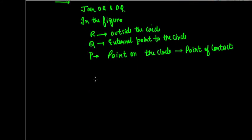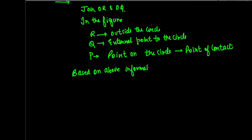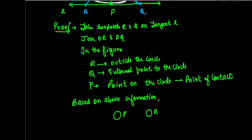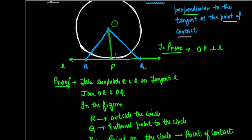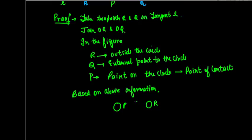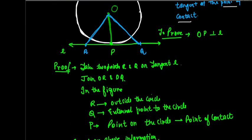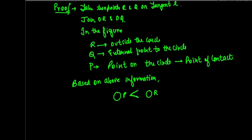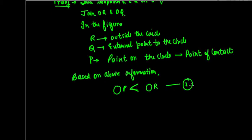Taking these points into consideration, let us consider OP and OR. Based on the above information, since R lies outside the circle and P is on the circle, the length OP is less than OR. The distance between O and P is less than the distance between O and R. Hence, OP < OR — relation 1.